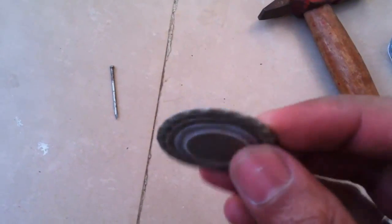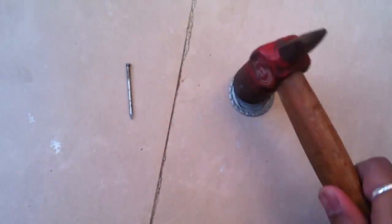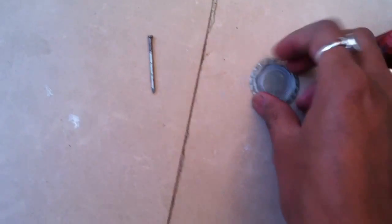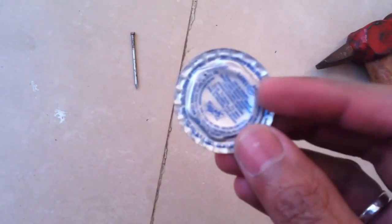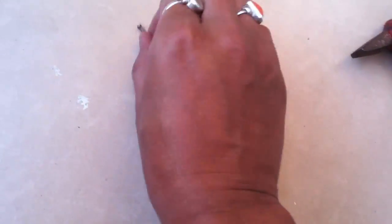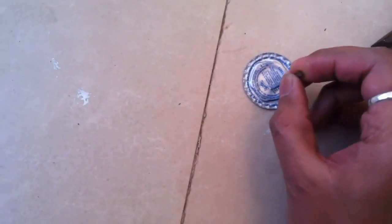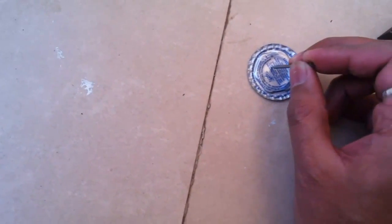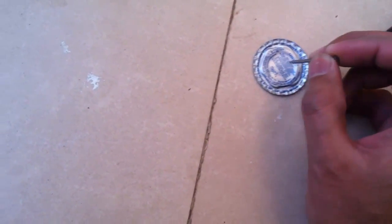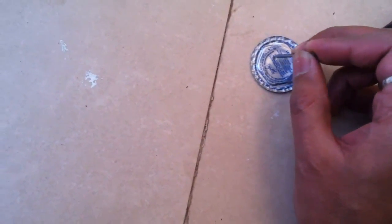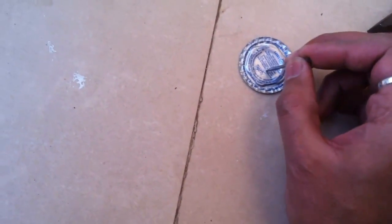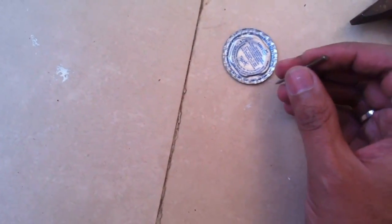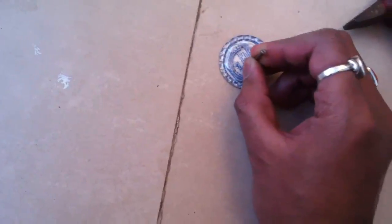So it should be like this, flat. Now we have to make two holes inside this metal cap, one here and one here. The holes should be near to each other and we'll make the holes with the help of the nail.